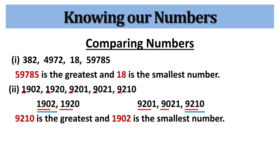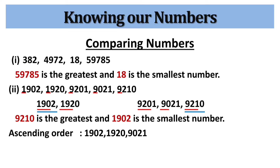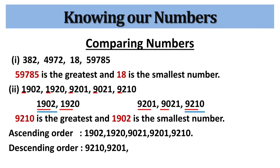Using the same method, you can find ascending and descending order. In ascending order, write down numbers from smallest to greatest. In descending order, write the opposite sequence — from greatest to smallest.